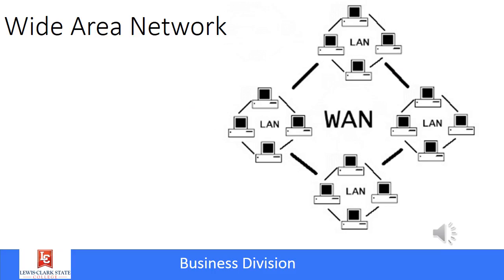This illustration shows an example of a wide area network. A wide area network is actually several networks that are connected together, but they don't exist at the same place. For example, if a college had an extension campus like LCSC does in Coeur d'Alene, the connections between the two would be considered a wide area network.